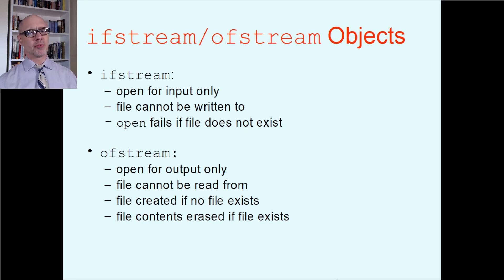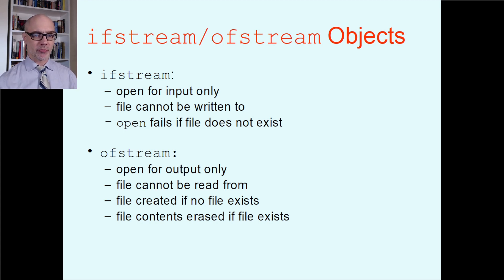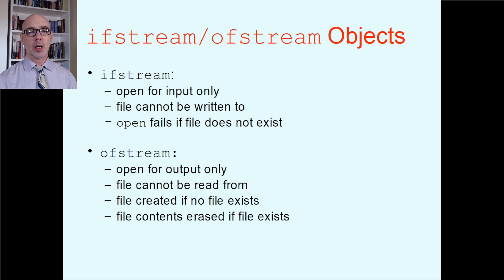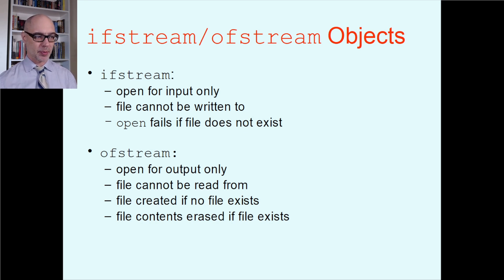There are three types of file stream objects. The ifstream — input file stream — can only open a file for input. It automatically opens a file purely for reading from the file into your program; the file cannot be written to with an ifstream, and the open function will fail if the file doesn't already exist on the hard drive. We'll show you how to error-handle that — validate that it actually opened successfully, otherwise put up an error message.